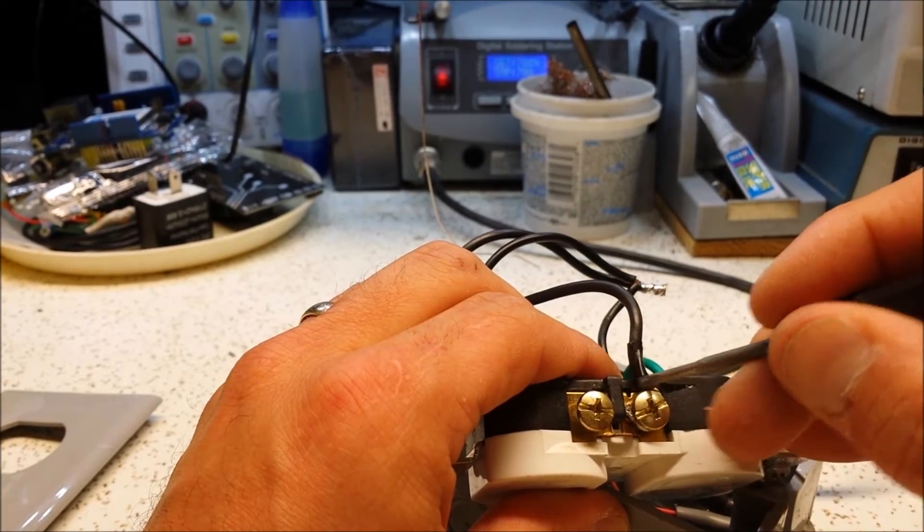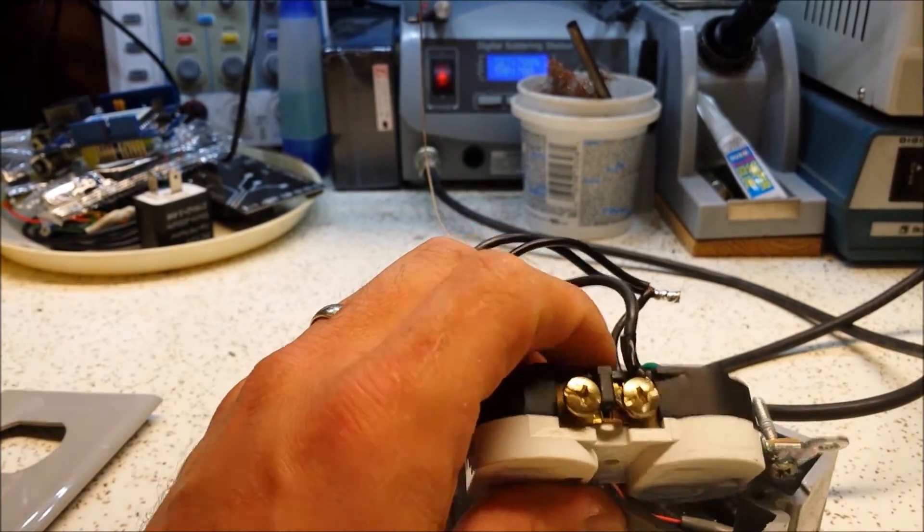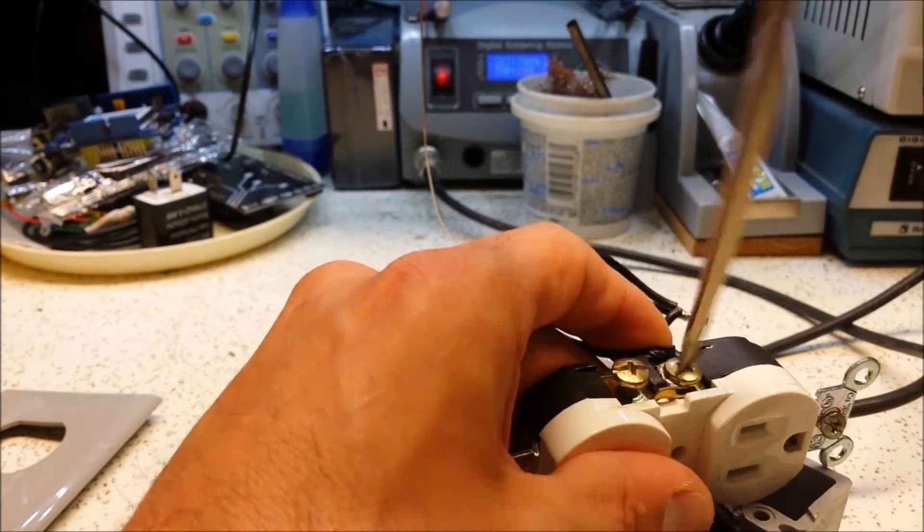Now because we're tightening the screw clockwise, we want the loop to go that direction as well. So that when we tighten it, it doesn't withdraw the wire from underneath the screw.